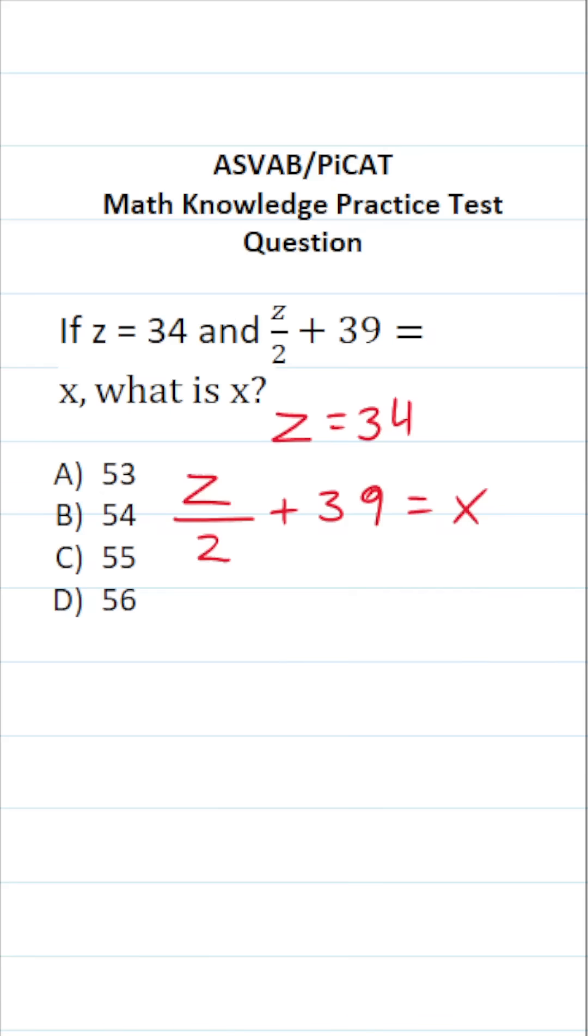In this case, we're told that z is 34. So let's go ahead and plug that in and solve this for x accordingly. This becomes 34 divided by 2 plus 39 equals x.